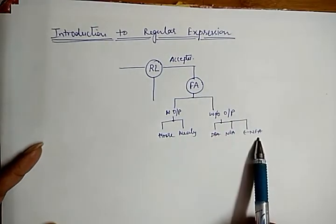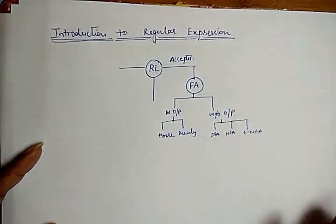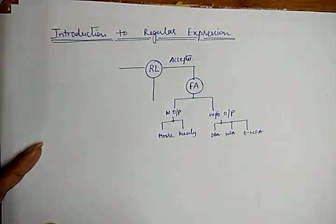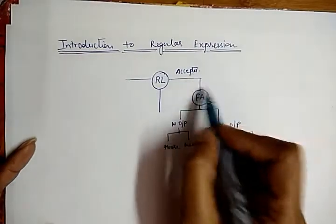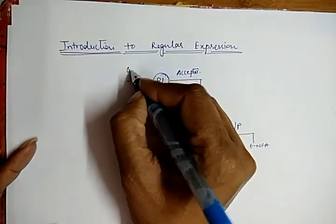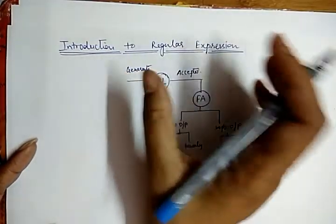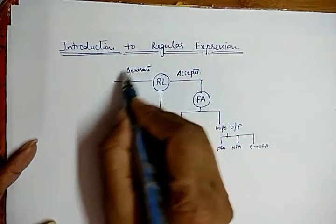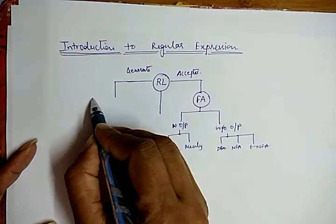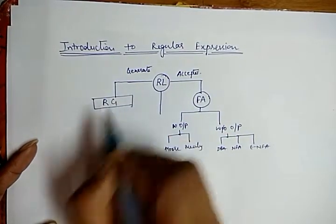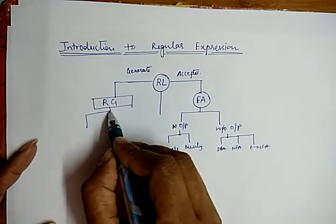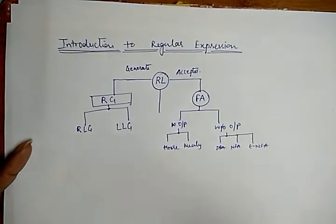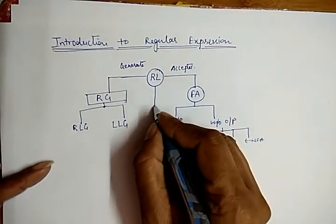In compiler design, we are concerned with finite automata without output — that is DFA, NFA, and epsilon-NFA. The with-output category is not considered in compiler design. The second category of regular language is string generation: we generate strings that are accepted by the particular language using a regular grammar, which can be right-linear grammar or left-linear grammar.